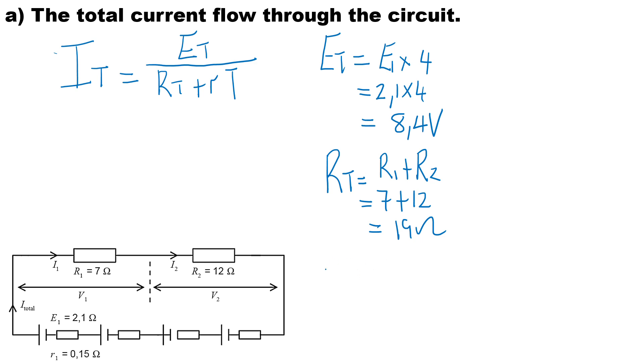Now I can calculate the internal resistance of the cells. We apply the same principle as the EMF: take the value of the internal resistance for one cell, which is 0.15 ohms, and multiply by the number of cells. There are four cells in series, so the total internal resistance is 0.6 ohms.